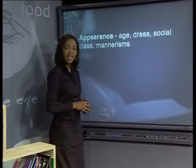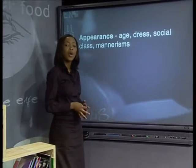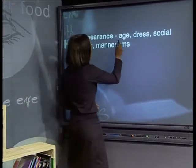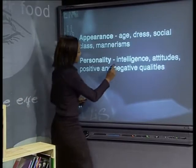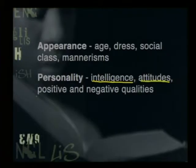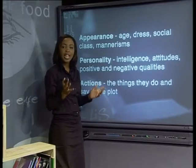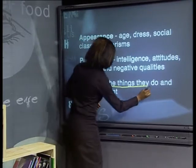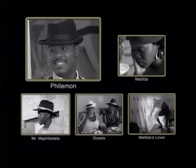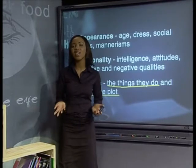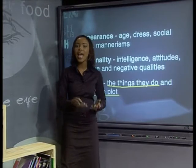So how do we analyse the characters we read about? How do we understand who they are and what they are like? Well, by looking at their appearance — which includes age, dress, social class and mannerisms — personality, intelligence, attitudes, and positive and negative qualities. Also their actions: the things they do and say in the plot. There are usually very few characters in a short story, as the author does not have the time or space to develop a whole lot of characters. There is usually one main character and a few others, with the focus on the main character. The other characters are important only in so far as they have an effect on the thoughts, action, and behaviour of the main character.